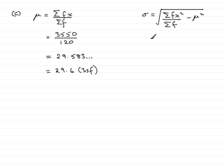So all we need to do is just fill this in. We're told that sigma fx squared is 138020. We know that sigma f, the sum of the frequencies, is 120. We have the mean over here. Let's make sure you use the unrounded value there. So we have minus 29.583 and so on, all squared.